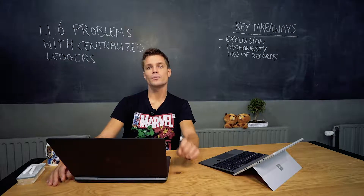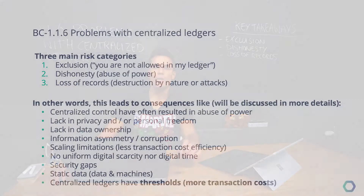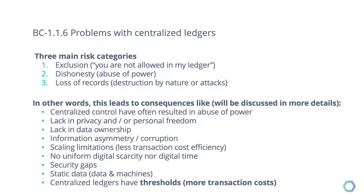But of course there are some downsides as well, and you can name many different types, but you can summarize them in three main categories. I want you to remember these three categories — they are important and you will see them often returning in following courses. The three main categories are: the first one is exclusion, the second one is dishonesty, and the third one is loss of records.